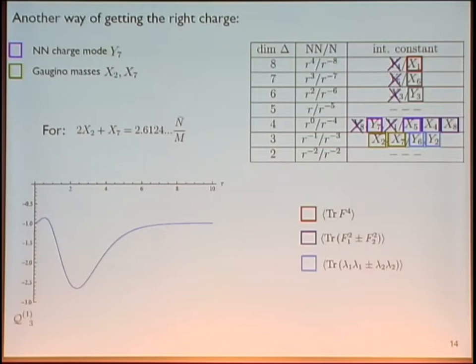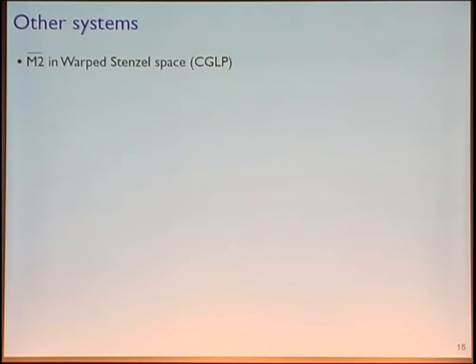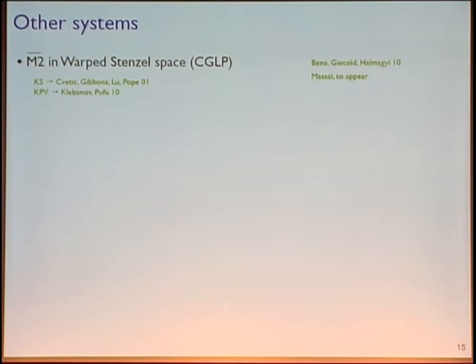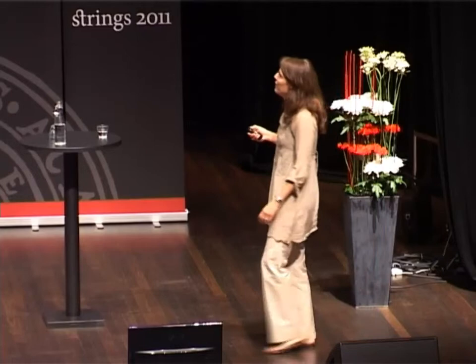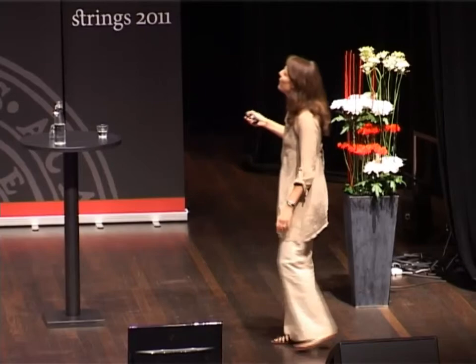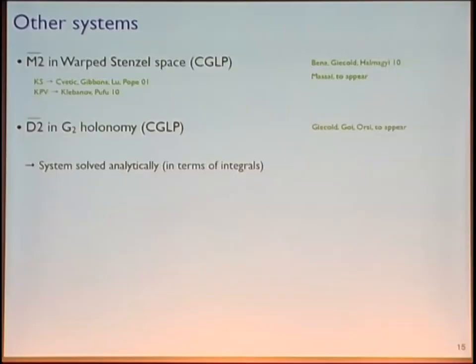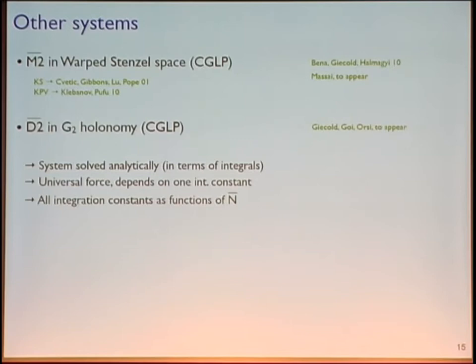Before concluding, let me mention other systems we have been studying in SACLE: anti-M2 branes in warped Stenzel space, where the corresponding Klebanov-Strassler-like solution was proposed by Cvetic, Gibbons, Lu, and Pope, and Klebanov and Pufu proposed a would-be metastable state. Also, our students studied anti-D2 branes in G2-holonomy spaces. In each case, the system can be solved analytically in terms of integrals. In all cases, there is a universal force form depending on one integration constant. One can find all the integration constants as functions of N-bar. In all cases, there are IR singularities which are similar or even worse.